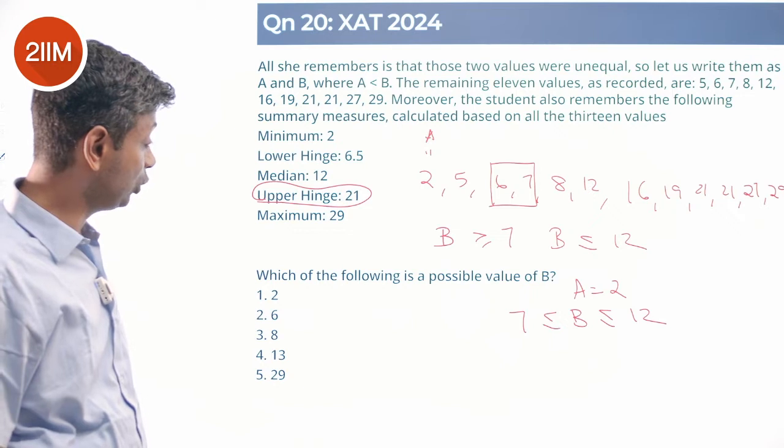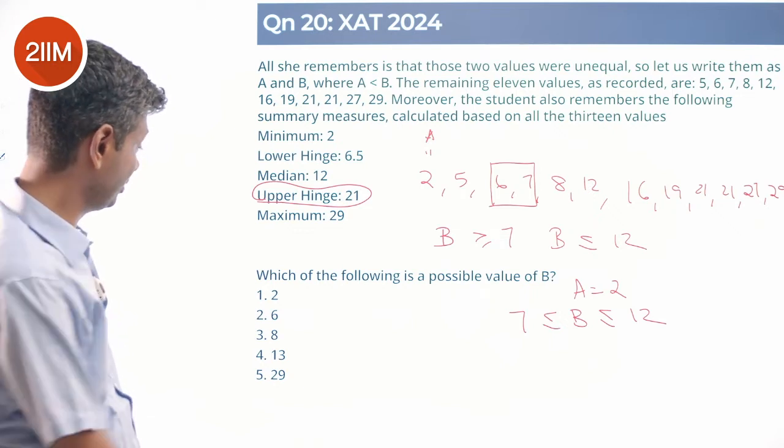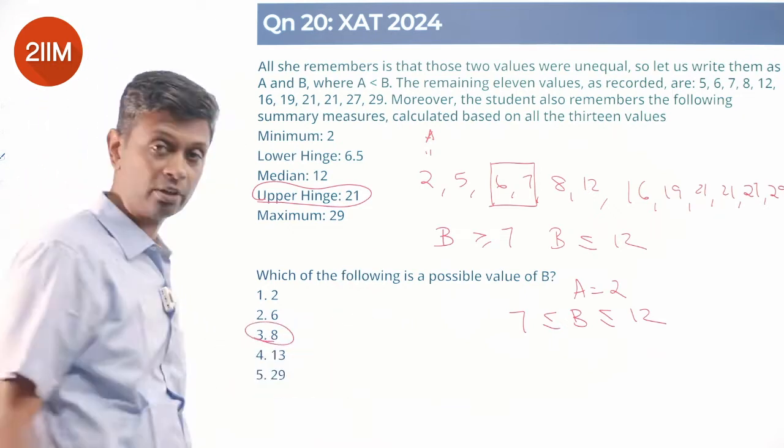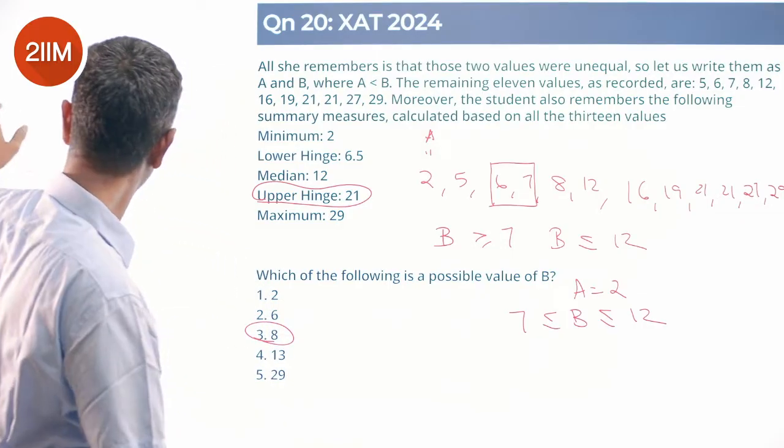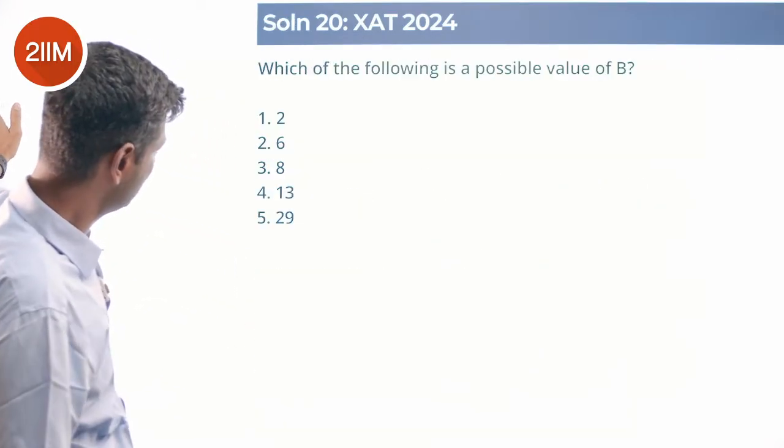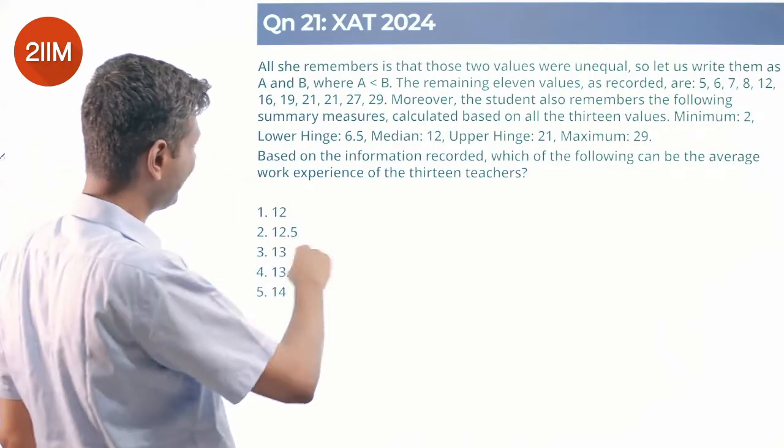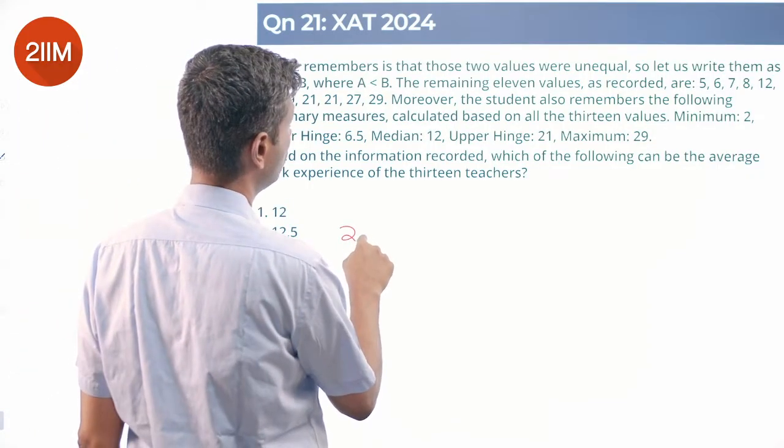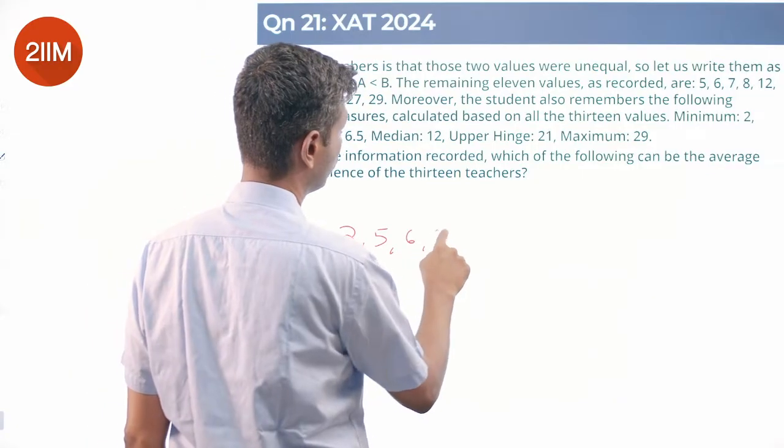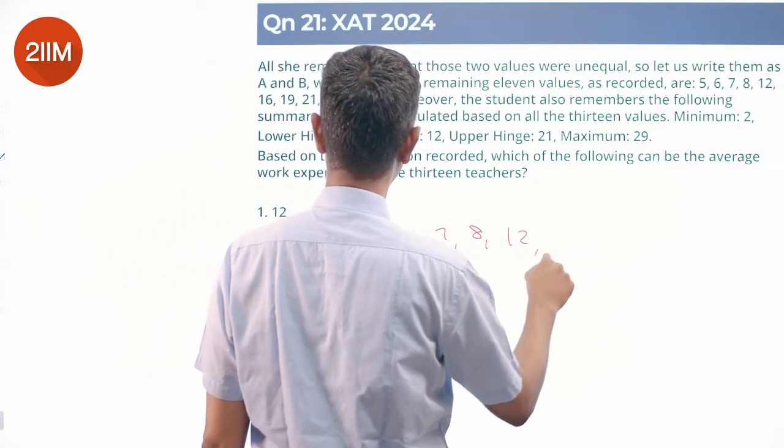Done. Nice. So I'm going to write down the numbers: 2, 5, 6, 7, 8, 12, 16, 19, 21, 21, 27, 29. 7 less than or equal to B less than or equal to 12, this much I know.